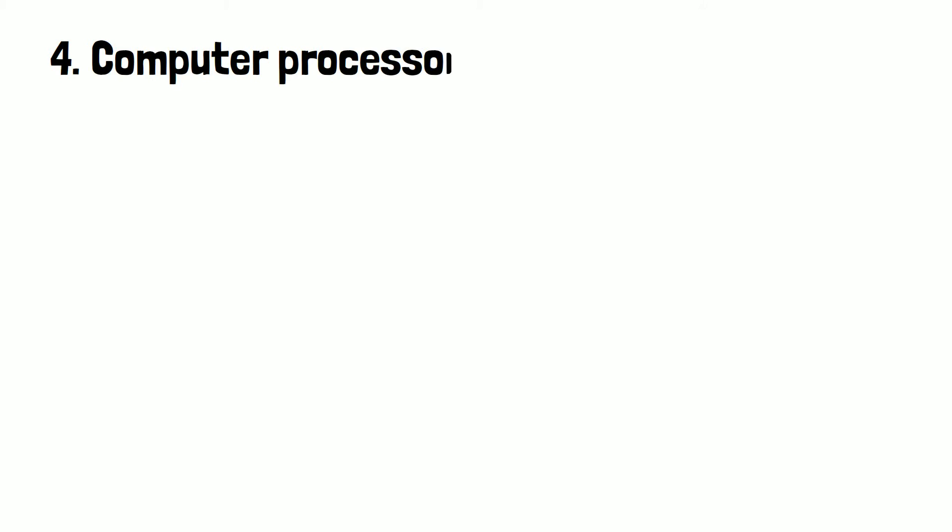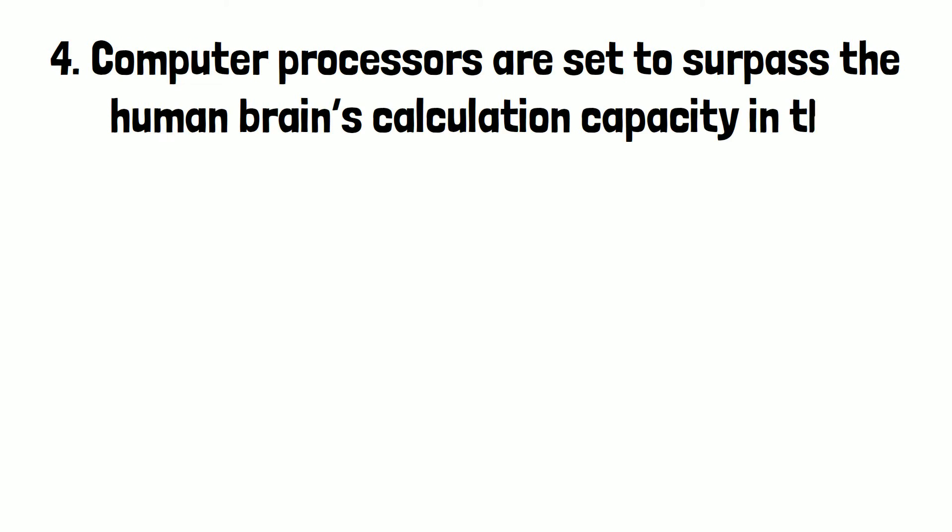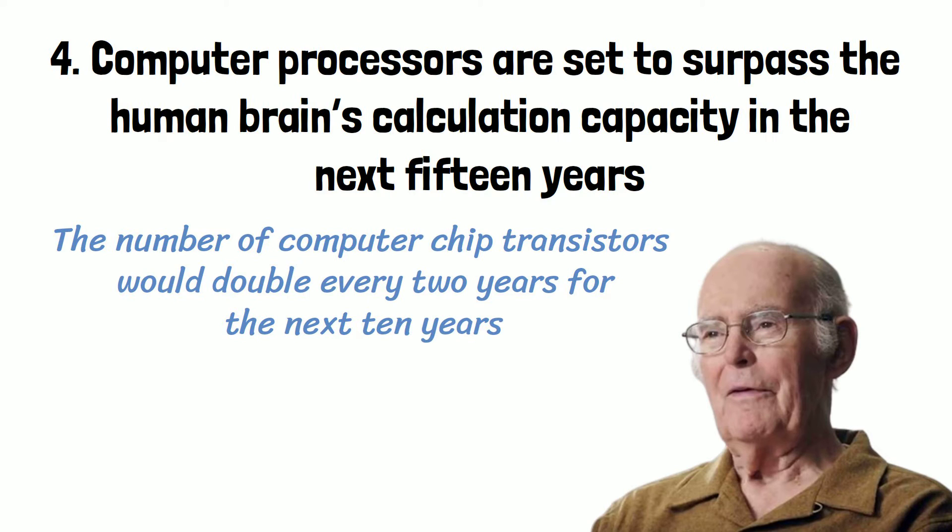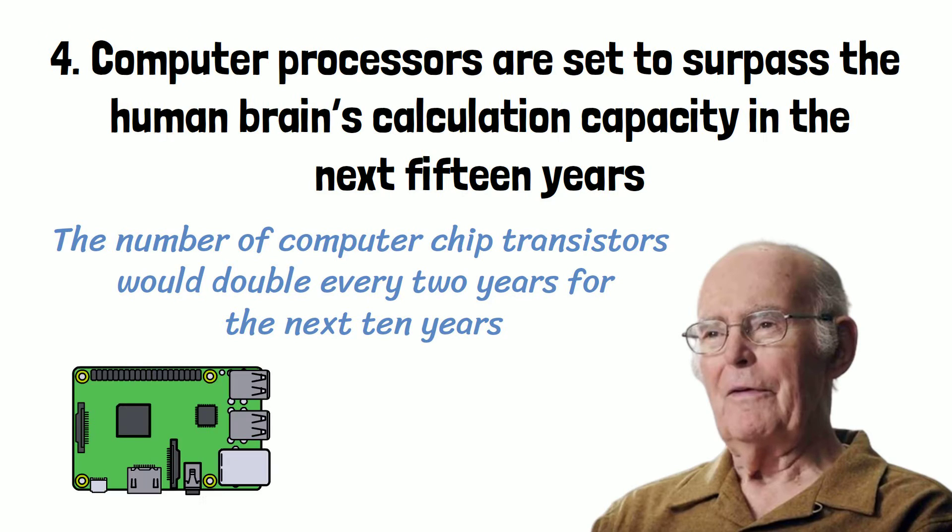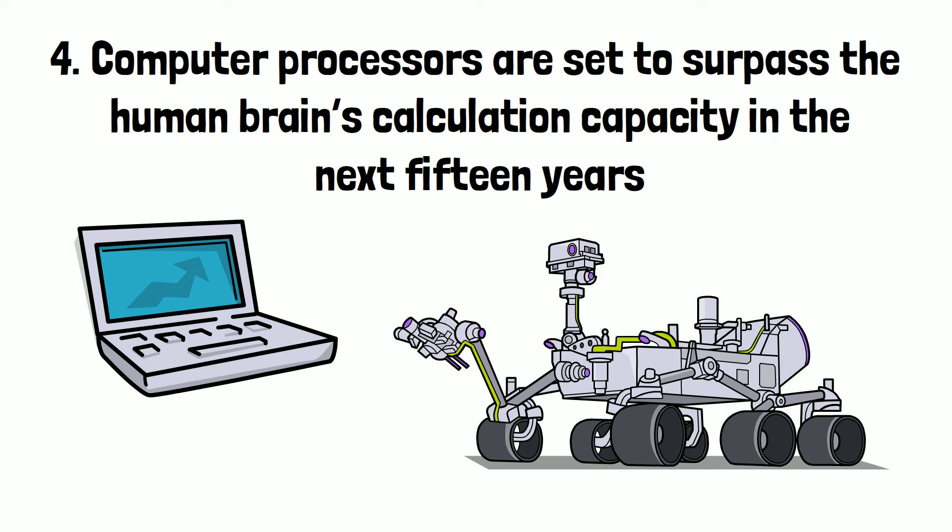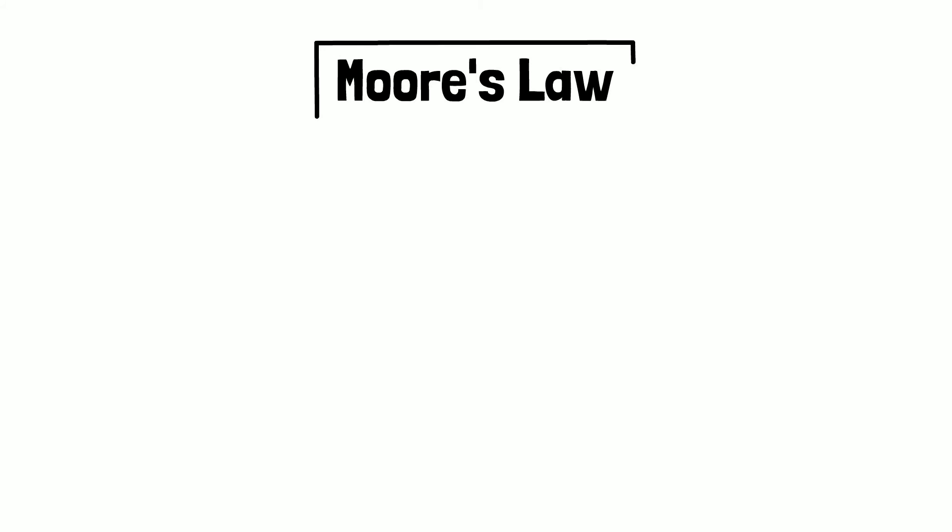Number 4. Computer processors are said to surpass the human brain's calculation capacity in the next 15 years. Intel co-founder Gordon Moore predicted that the number of computer chip transistors would double every two years for the next 10 years. If computer processors continue to progress in line with Moore's law, the average laptop will surpass the speed of the human brain in the next 15 years.